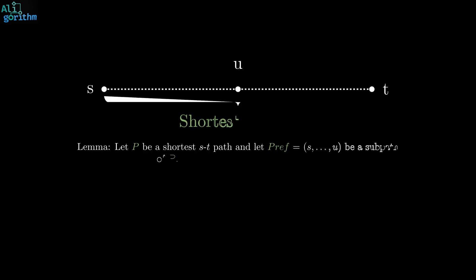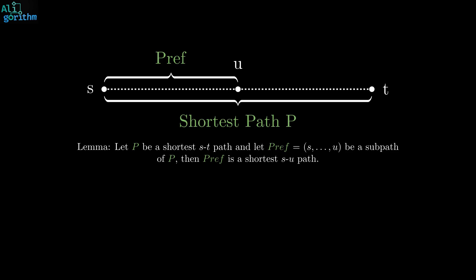Let's prove the correctness of Dijkstra's algorithm. We'll use the following lemma. The prefix of a shortest path is a shortest path too. In other words, if your shortest path to go to school passes through a gas station, it means you took the shortest path to the gas station too. Make sense, right? Let's prove it formally.